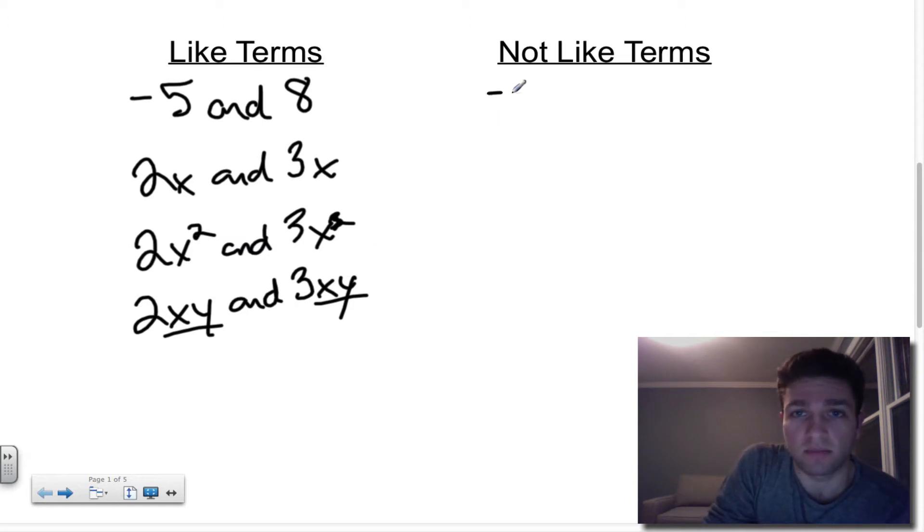Now let's look at some examples of things that are not like terms. That would be something like negative 5x and 8. Those are not like terms because the variable factor x is only on the negative 5, but it's not on the 8, which means they could not be combined, so they're not like terms. Another example of not like terms would be something like 2x and negative 3y. This one's pretty obvious. They both have variable factors, but they're not the same.